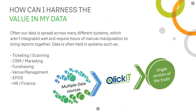We're talking about various types of data here — mostly customer data held in ticketing systems, possibly a separate CRM or marketing system like MailChimp, fundraising systems, venue management applications like Artifax, EPOS systems providing transactional or room usage information, and HR and finance systems. All of that information needs to be brought together to get a full 360-degree view and generate a single version of the truth.